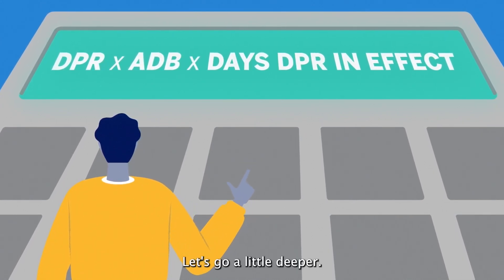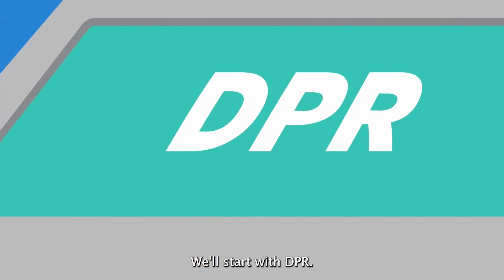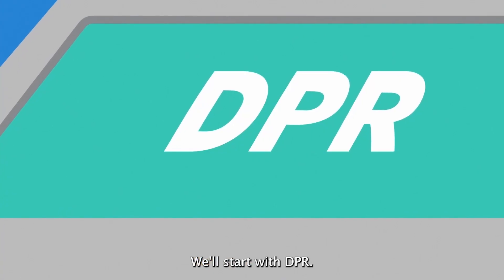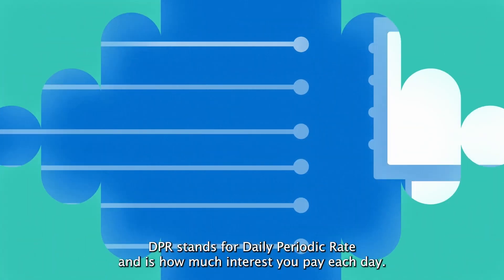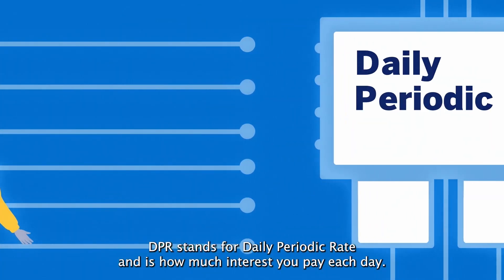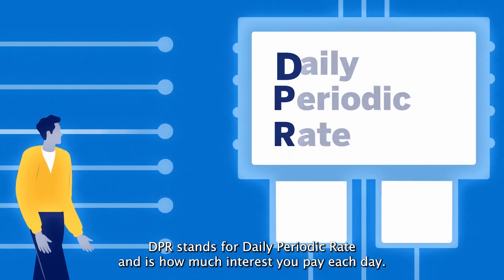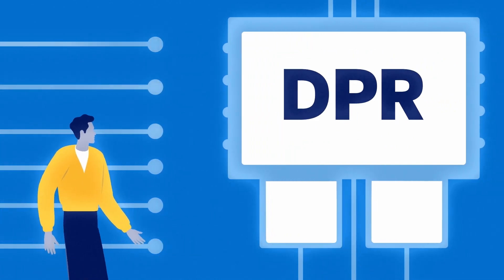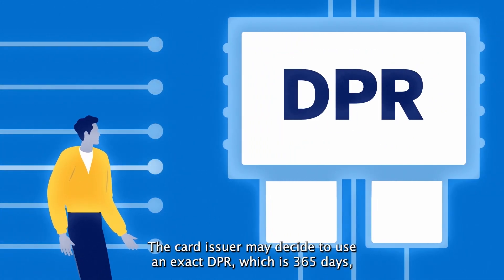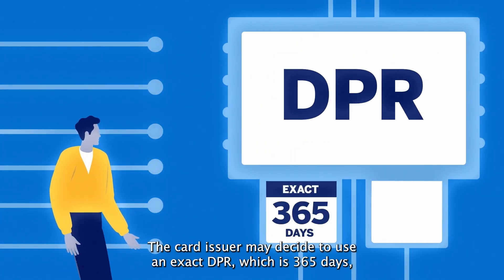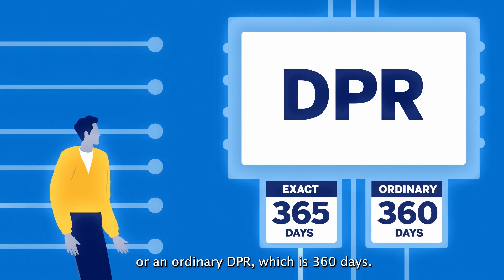Let's go a little deeper. We'll start with DPR. DPR stands for daily periodic rate and is how much interest you pay each day. The card issuer may decide to use an exact DPR, which is 365 days, or an ordinary DPR, which is 360 days.